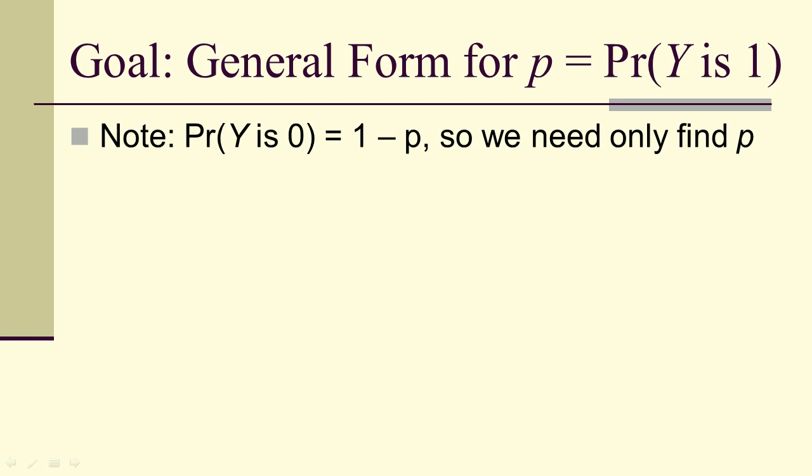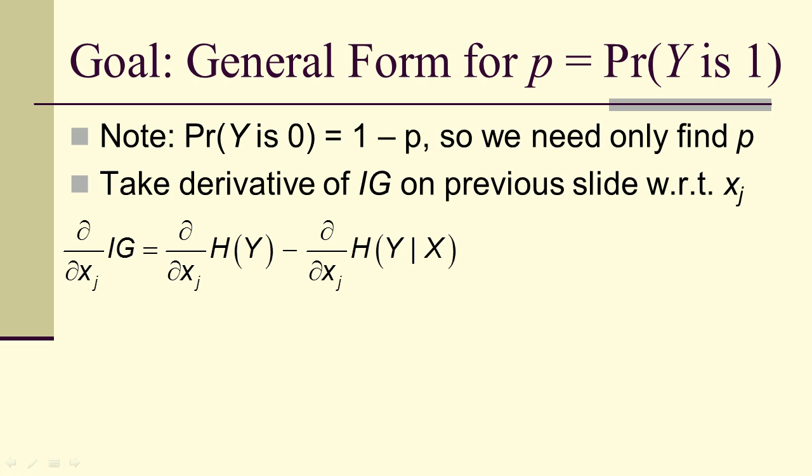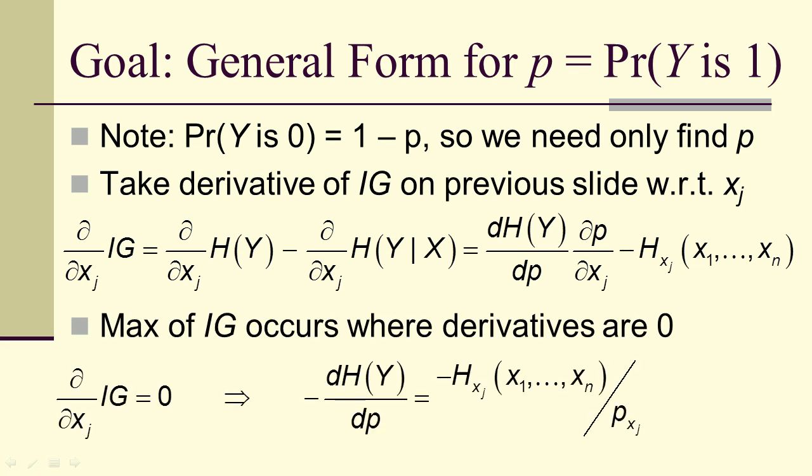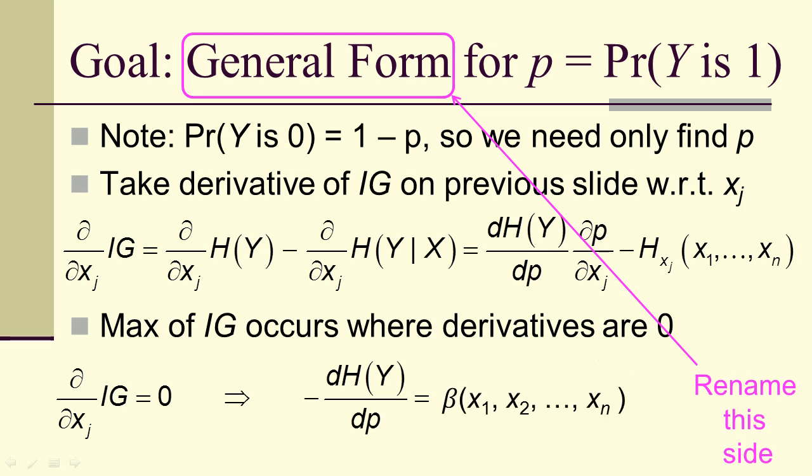So if the probability that Y is 1 is P, the probability that Y is 0 is 1 minus P. So we're going to work only with the P. Take the derivative and use the chain rule. So we're taking the derivative of H entropy with respect to the P probability times that derivative minus the derivative of H. The maximum is going to occur where the derivatives are 0. So we take negative of the derivative is equal to negative of all that stuff. We don't know what all that stuff is, so let's just rename it. After all, we're just going for the general form here. So we're going to call that beta.